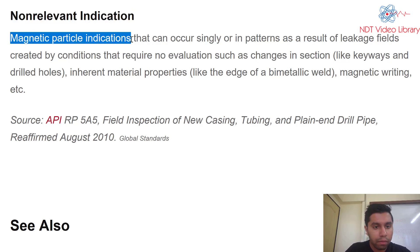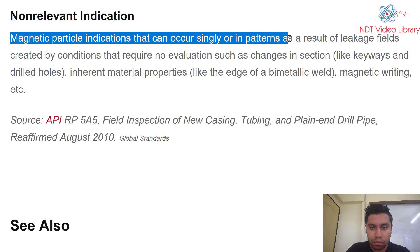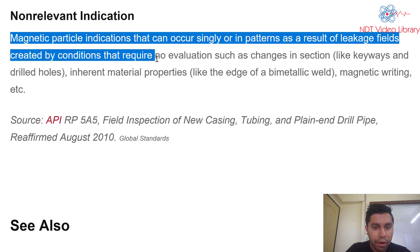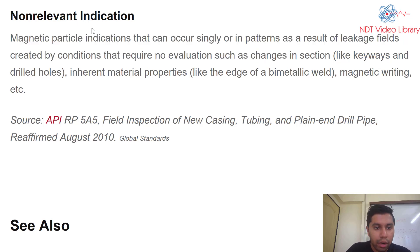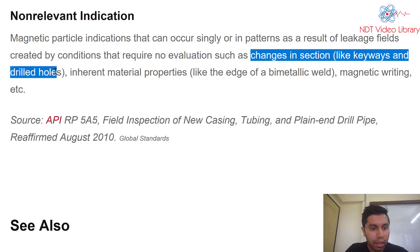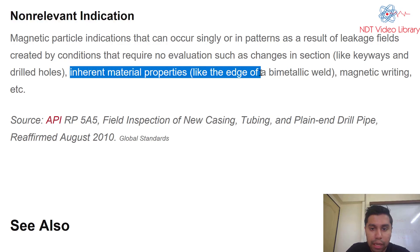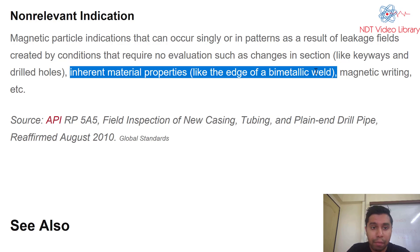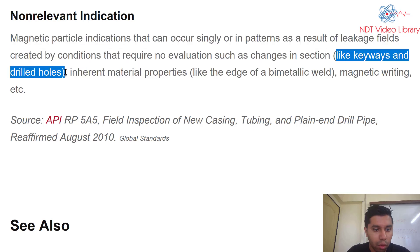Comparing that with non-relevant indications: magnetic particle or liquid penetrant indications that can occur singly or in patterns as a result of leakage fields from conditions that require no evaluation — such as changes in section geometry — are non-relevant. Indications caused by geometry changes like keyways and drilled holes are typically non-relevant. Inherent material properties such as the edge of a bimetallic weld will give an indication but are also non-relevant, typically in magnetic particle testing.